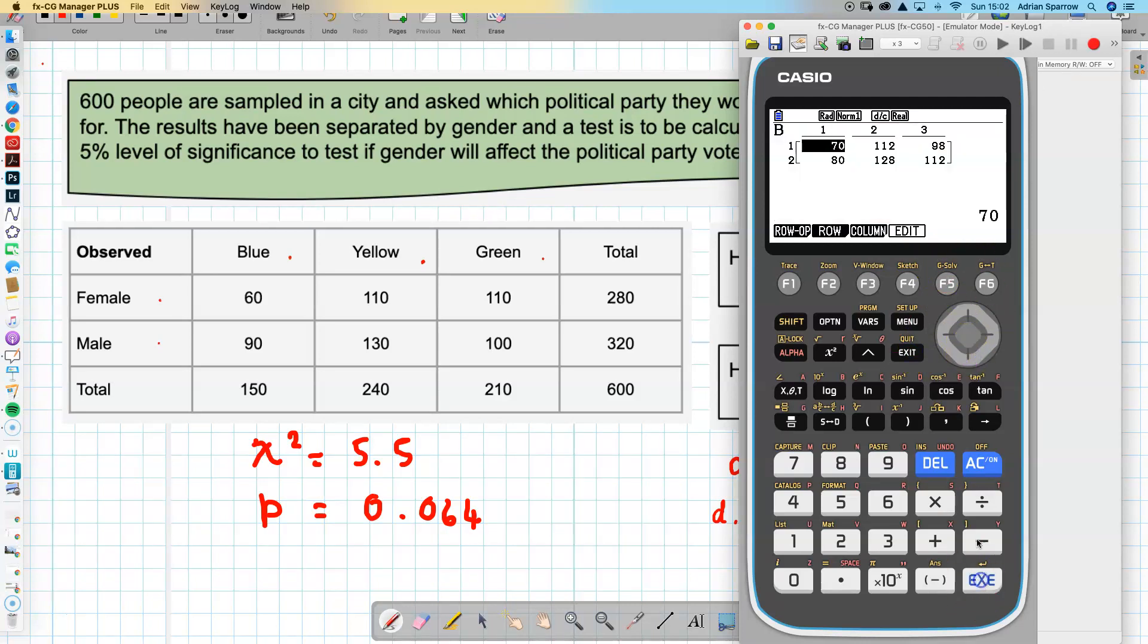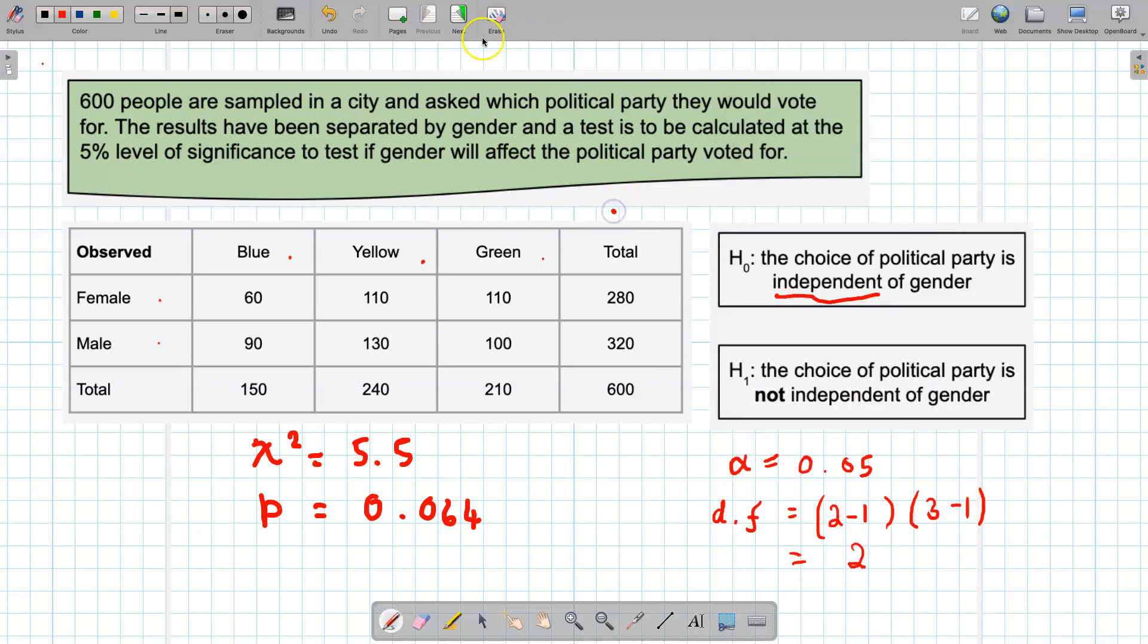What I didn't do is I didn't enter B, but if I look at B it's worked out these values. They're not the same as these, it's a different matrix and these are the expected. This is what I would expect to happen if they're independent.